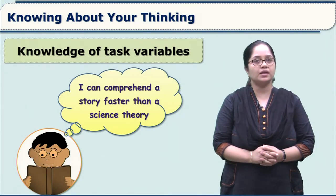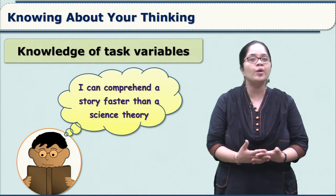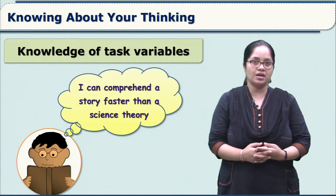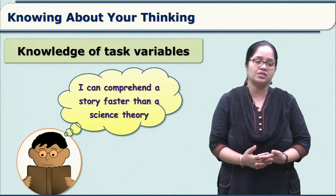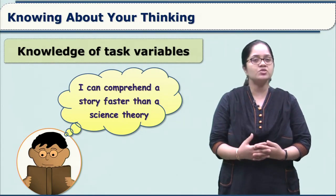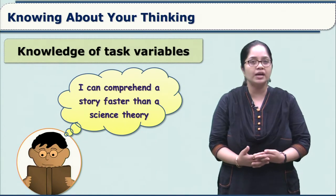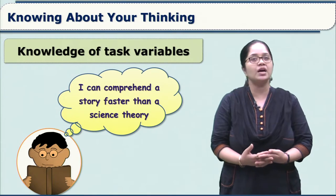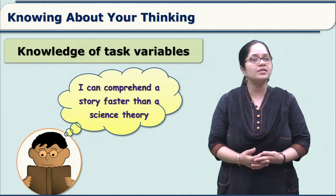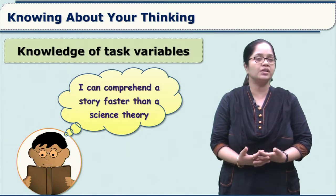The second part under metacognitive knowledge is knowledge of task variables. Knowledge of task variables is being aware about the variables of the task — how difficult the task is and how much time you will require to complete it. You might have experienced that when reading a book or working on a project, some chunks are easy to comprehend, while other parts of a lesson take more time to understand or memorize. Look at this picture — the child is saying he can comprehend a story faster than a science theory, recognizing that story learning is easier than learning a science theory.